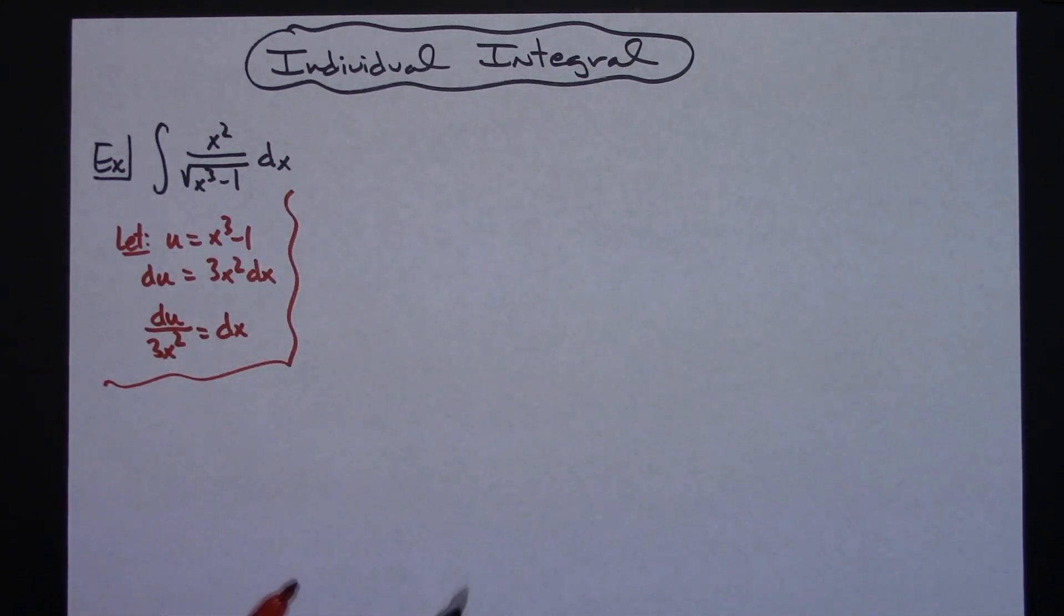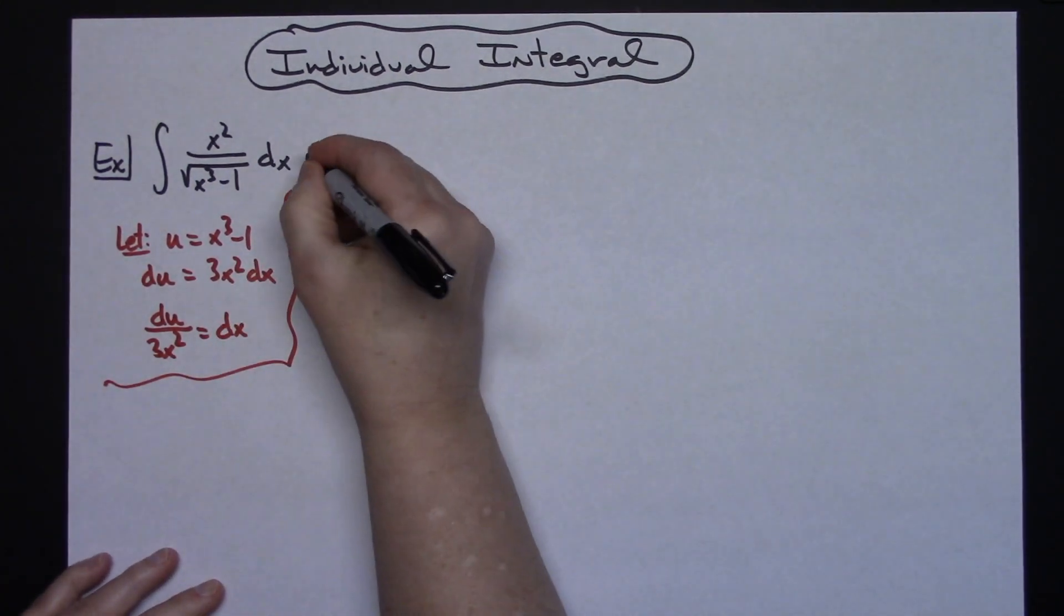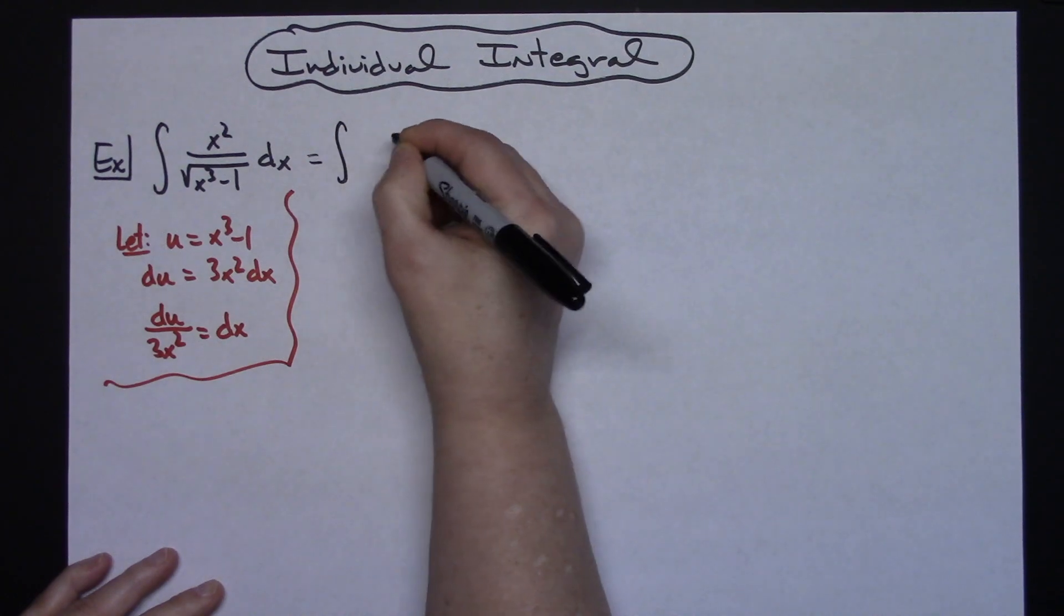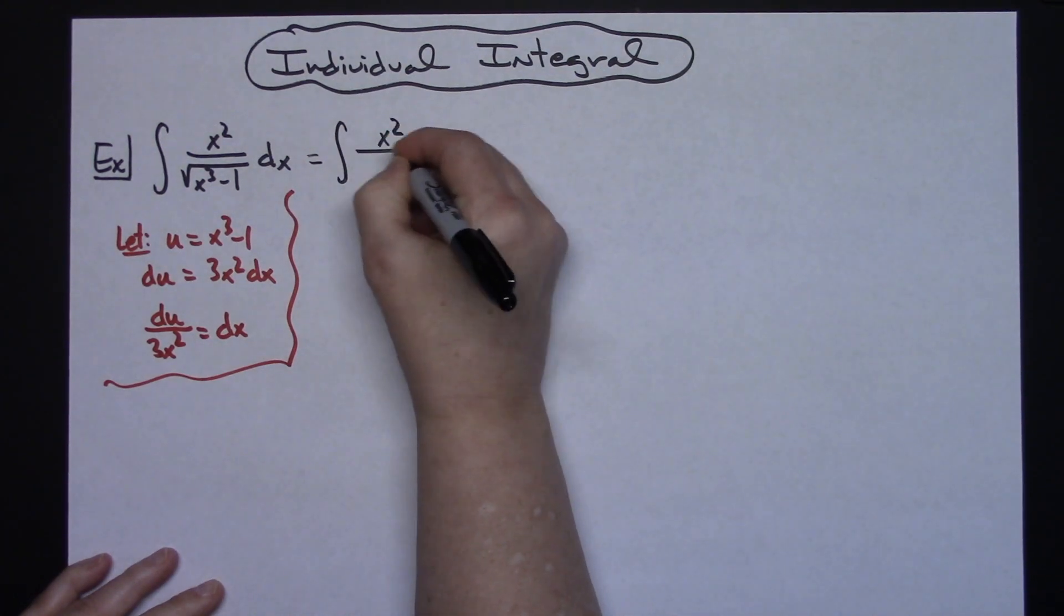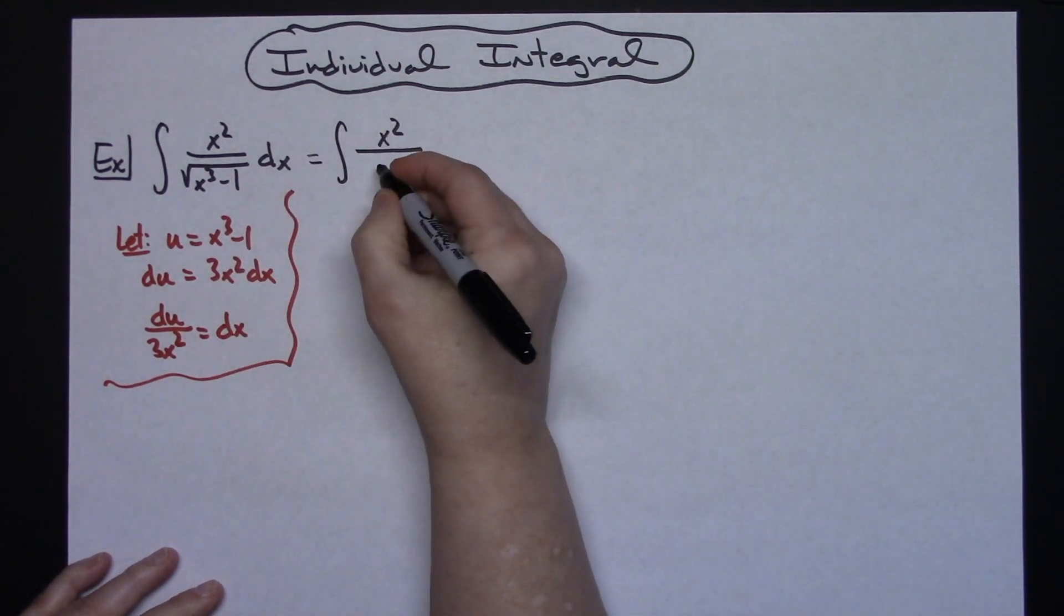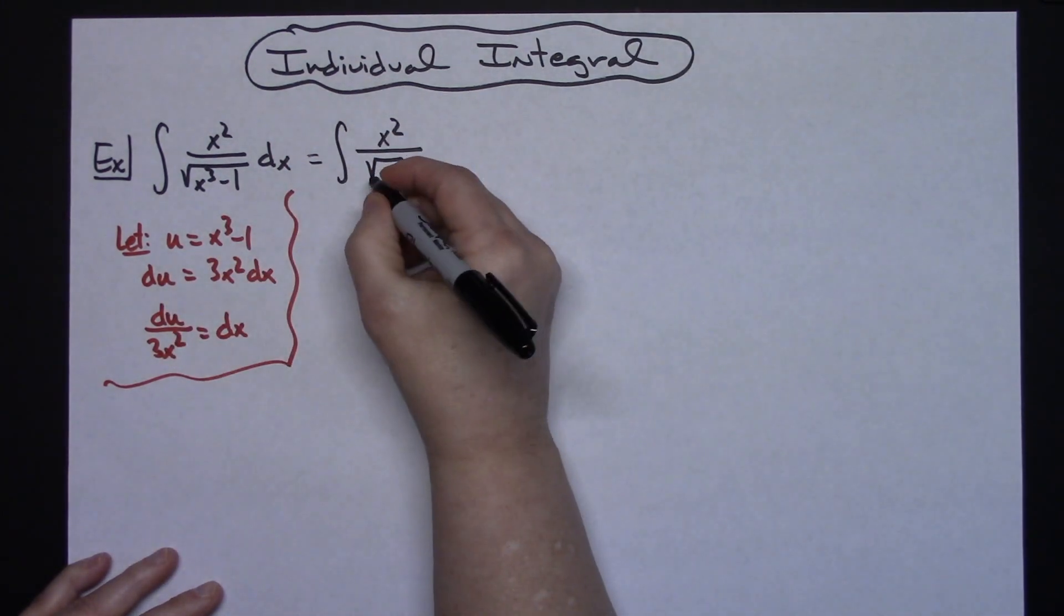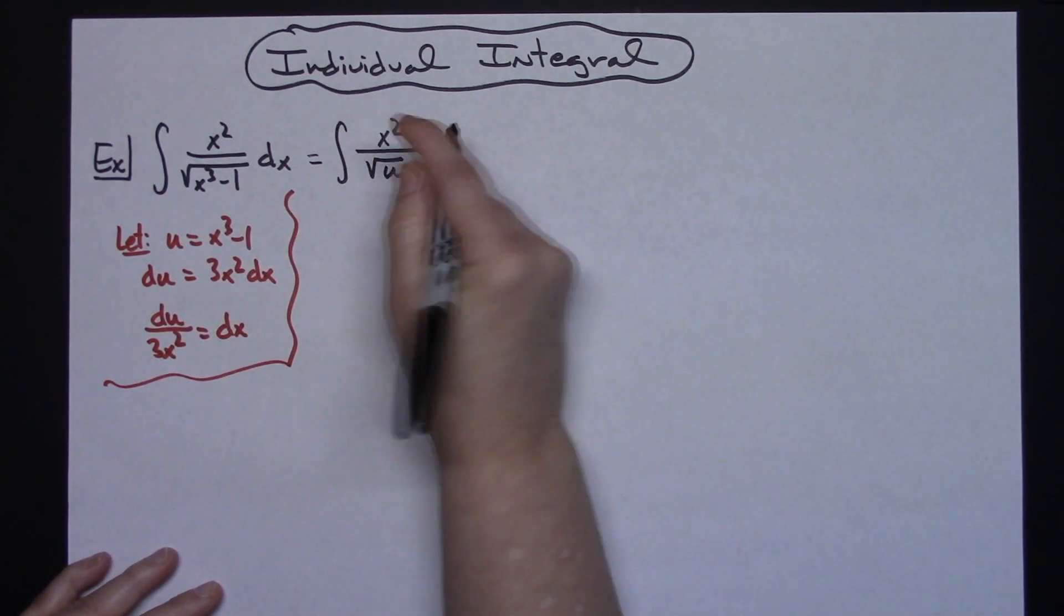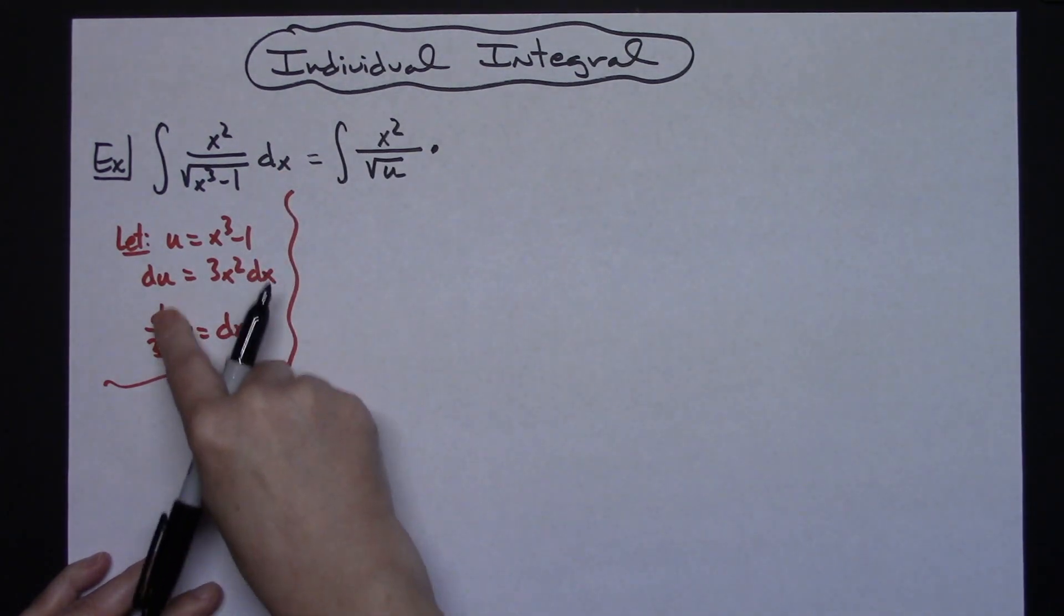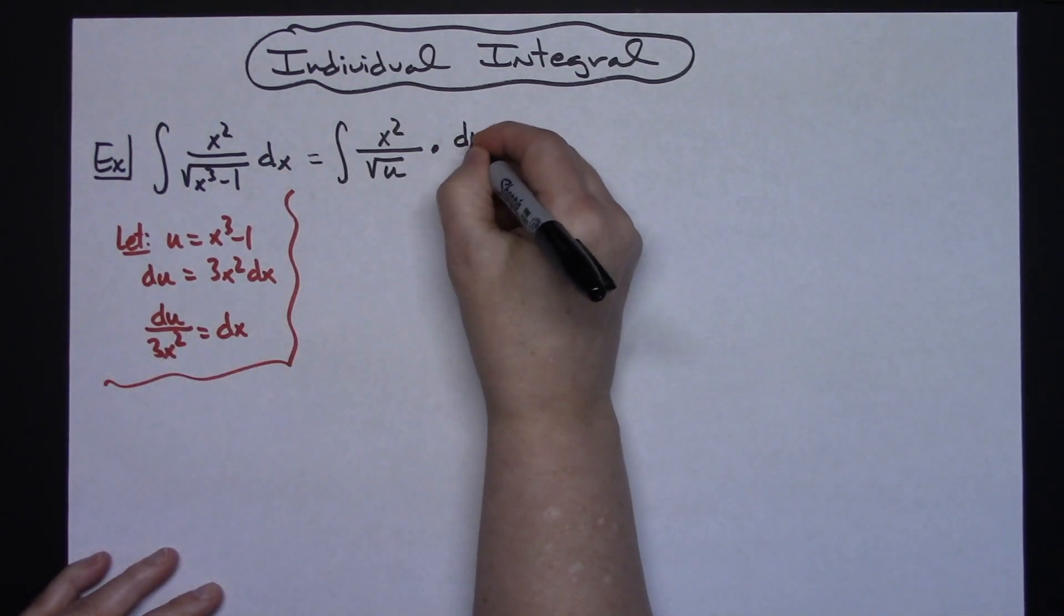Then we're going to come up here to the original integral and start doing some substitutions. The x² will stay on top. It'll be the square root of, and then we'll replace x³ - 1 with our u. We'll replace dx with what we said it was equal to, so du/(3x²).